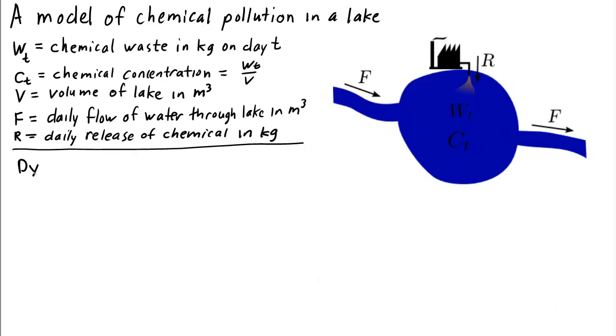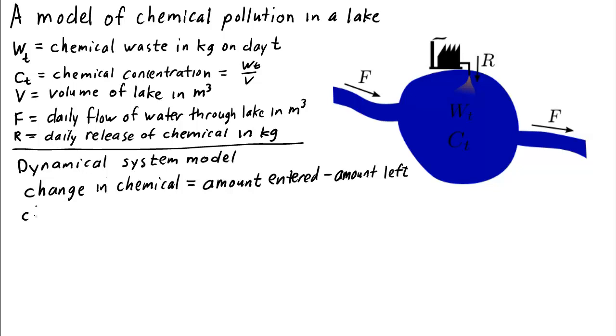To write down a dynamical system model involving the chemical waste w sub t, we need to concern ourselves with the change in the chemical. The change in the chemical each day is equal to the amount that entered the lake minus the amount that left the lake. In terms of our state variable, the change in chemical in one day, say from day t to day t plus 1, is just w t plus 1 minus wt.